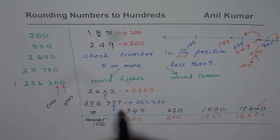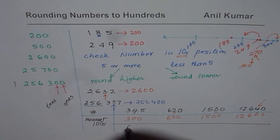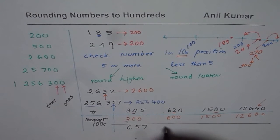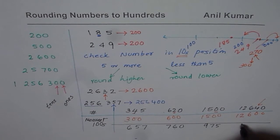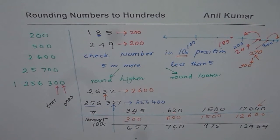Now let me give you another set of examples where the numbers in tens position will be more than 5. They will be rounded higher. For example, 657, 5 or more. 760, 6 is more than 5. 975. And 12,964.